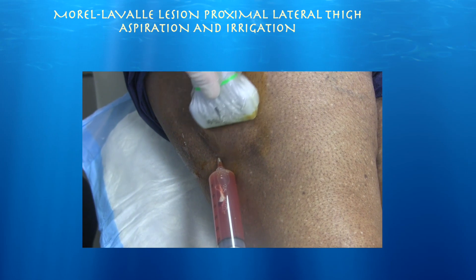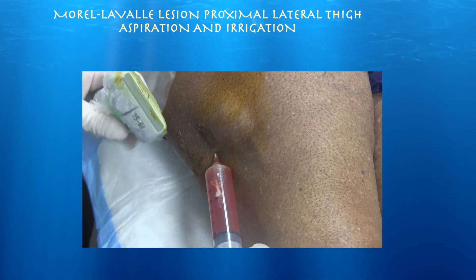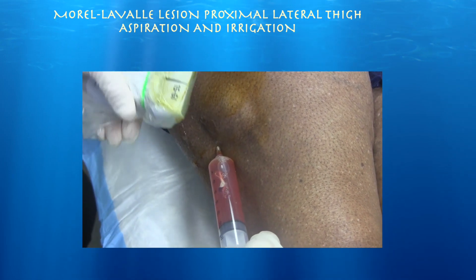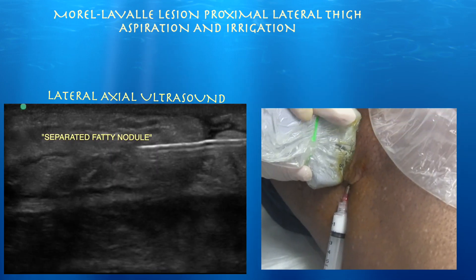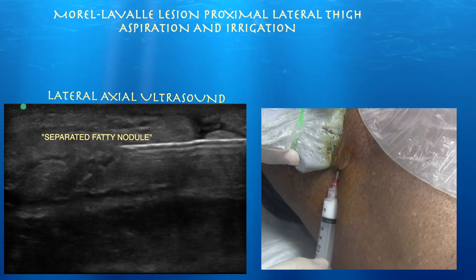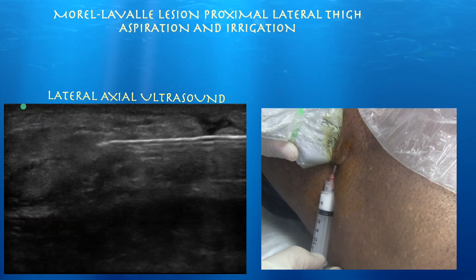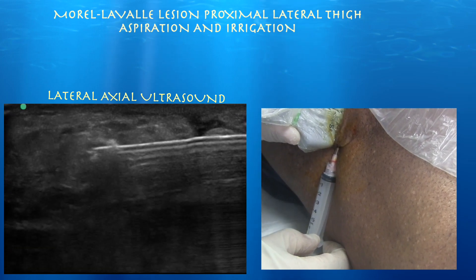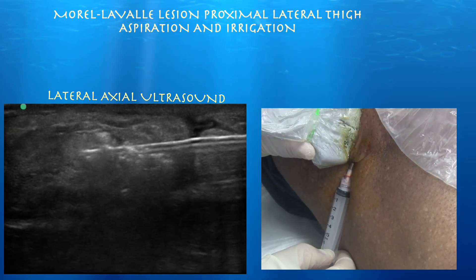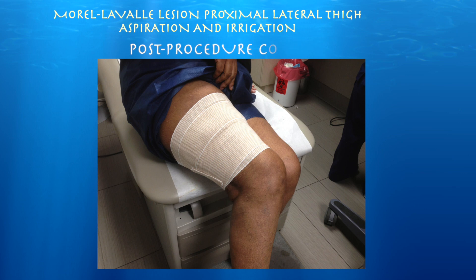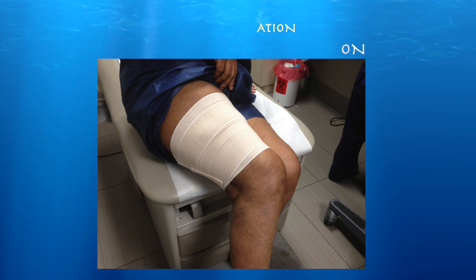We injected cortisone directly into the fatty nodule, using the atrophic side effect of cortisone to hopefully shrink it. You can see the cortisone filling up the nodule. Upon follow-up, unfortunately the cortisone did not have an effect on shrinking the fatty nodule, and therefore she was referred to surgery for removal. However, the Morel-Lavallée lesion itself essentially did not recur.